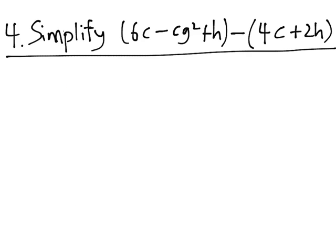Problem 4. Simplify 6c minus cg squared plus h minus 4c plus 2h. Again, let's align these terms vertically.